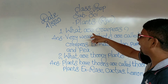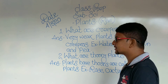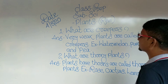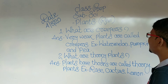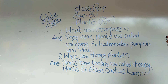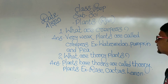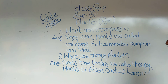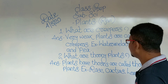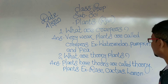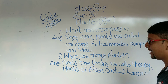Again: What are creepers? Answer: Very weak plants are called creepers. Example: watermelon, pumpkin, and pea. Question number two: What are thorny plants? Answer: Plants have thorns are called thorny plants. Example: rose, cactus, and lemon.